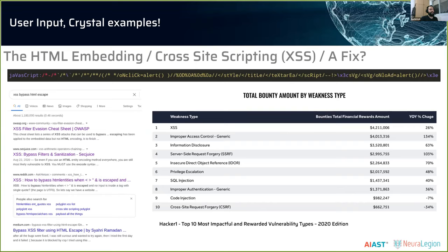How common is XSS? There's an amazing table from HackerOne, one of the bug bounty platforms where hackers legally attack targets and get paid for it. The most common, most impactful, and most rewarded vulnerability found was XSS — a critical, high-severity vulnerability. People made around four million dollars just from XSS bug bounties in one year.